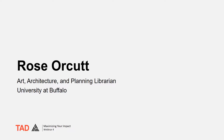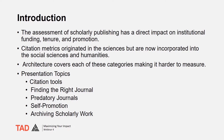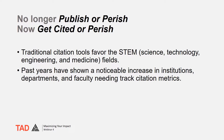I'm the Art, Architecture and Planning Librarian at the University of Buffalo. The assessment of scholarly publishing has a direct impact on institutional funding, tenure, and promotion. Citation metrics originated in the sciences but are now being incorporated into the social sciences and humanities. Architecture covers each of these categories, making it a bit harder to measure. I'm going to go over the metric tools, how to find and avoid predatory journals, self-promotion, and archiving of scholarly work. It is no longer publish or perish — it is now get cited or perish.